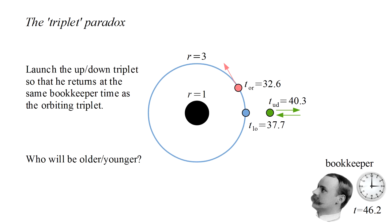We find that for the stationary local observer, the experiment lasted 37.7 seconds. For the orbiting triplet, 32.6 seconds, and for the up-down triplet, 40.3 seconds.